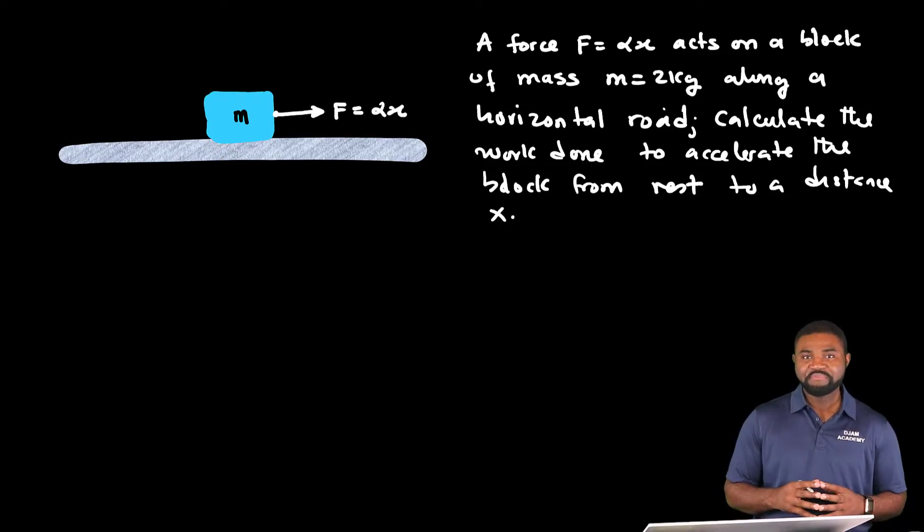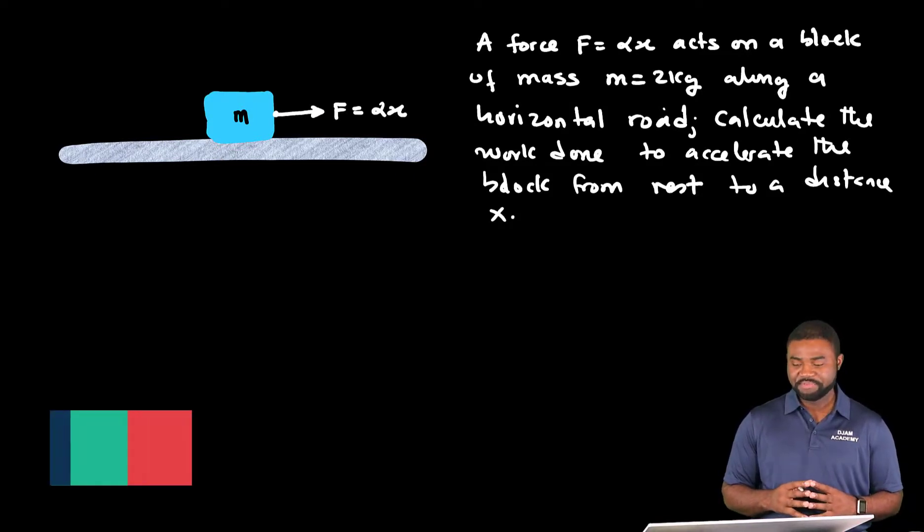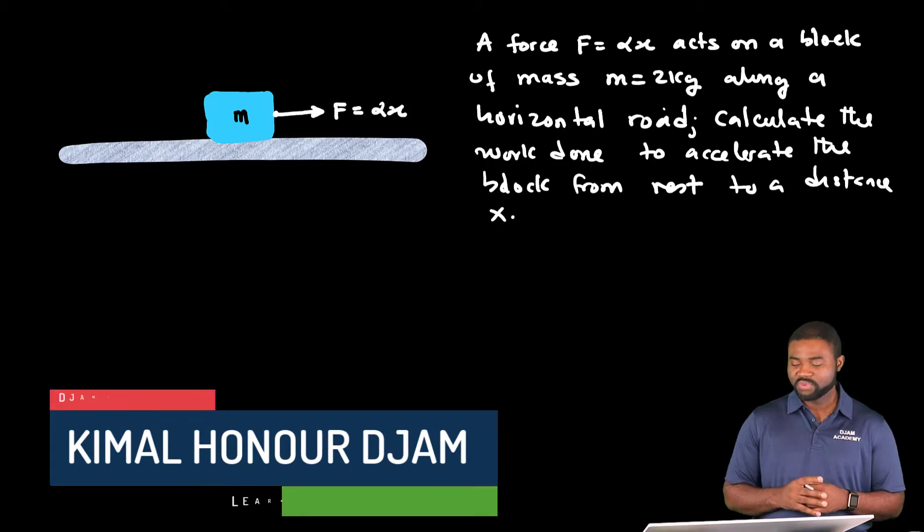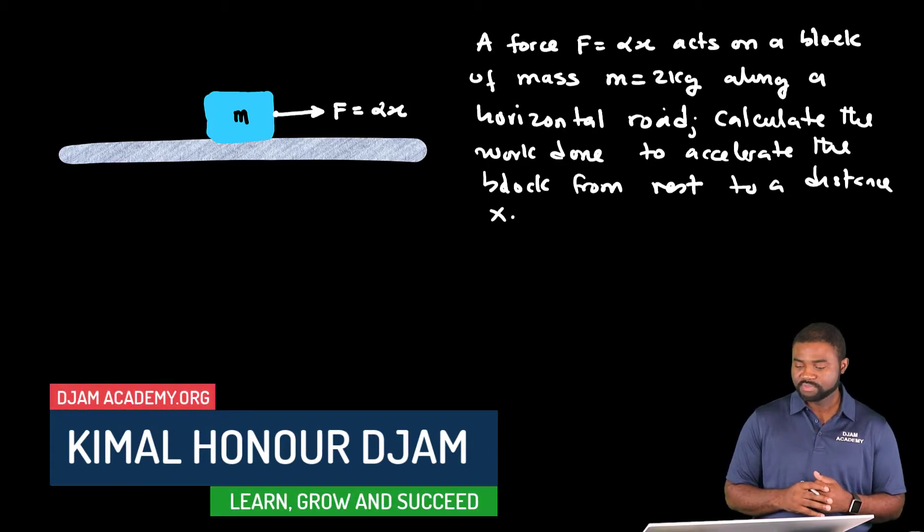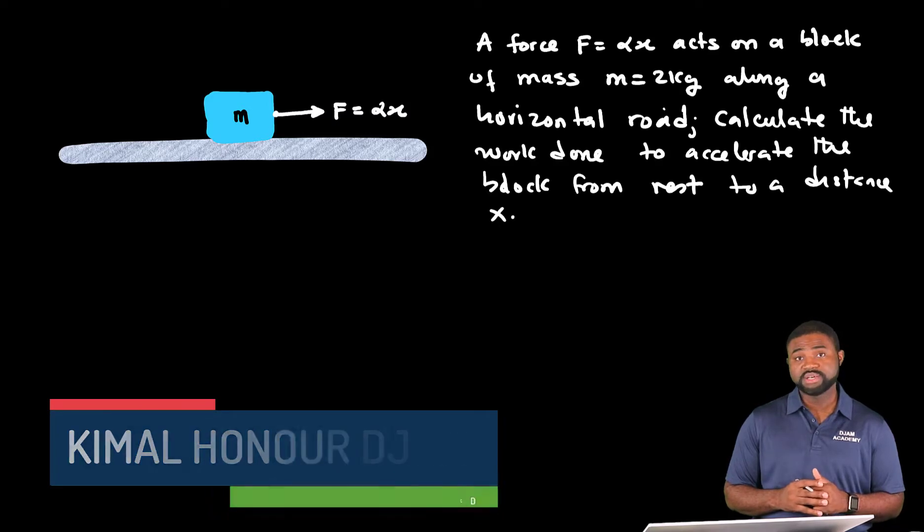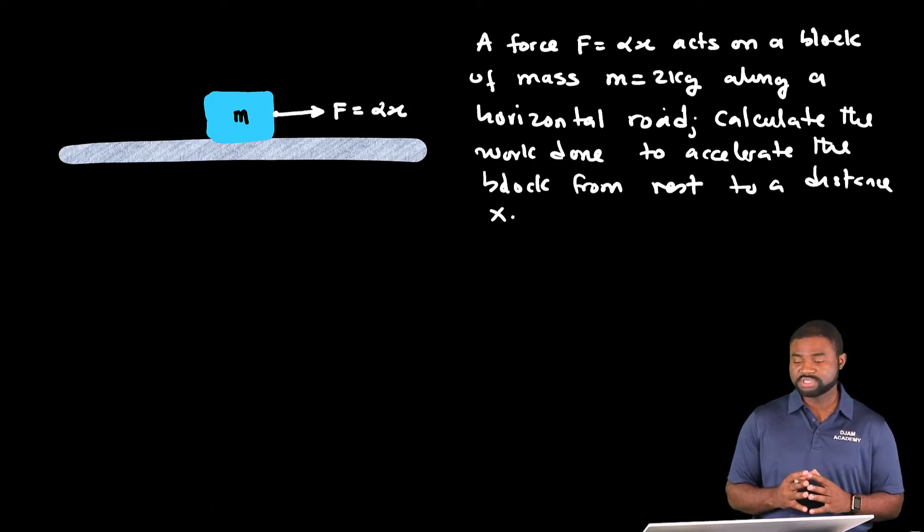Hi everyone and welcome to JAMA Academy. In this example we have a force whose magnitude is given by alpha x, where alpha is a positive constant, acts on a block of mass m equal to two kilograms along a horizontal road.